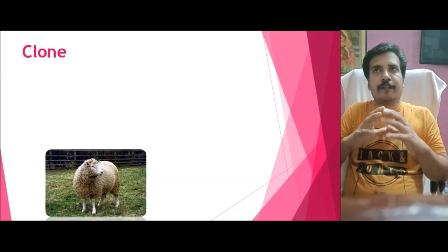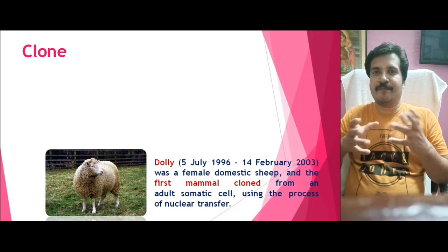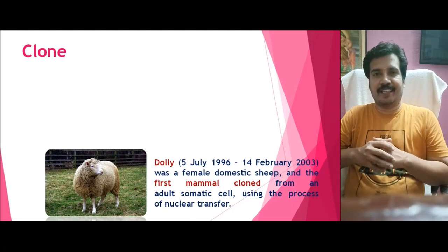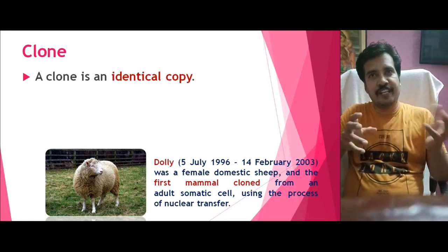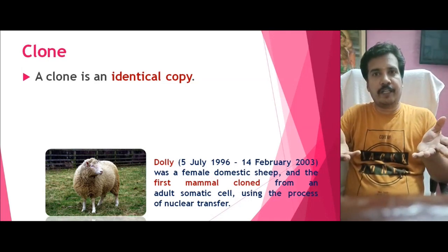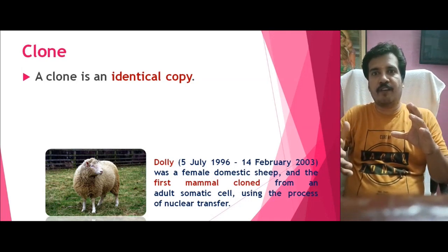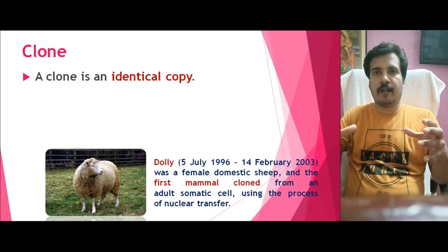Coming to my first slide — what is meant by a clone? Whenever we talk about the word clone, what comes into your mind is a sheep. That sheep we call Dolly. Dolly sheep is the first mammalian clone developed from a somatic cell. So a clone is nothing but an identical copy of a gene, a cell, or an organism itself — making multiple copies of the same gene, cell, or organism.